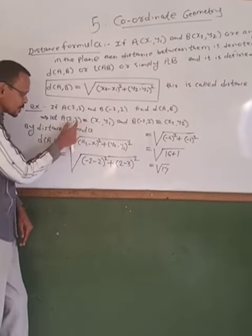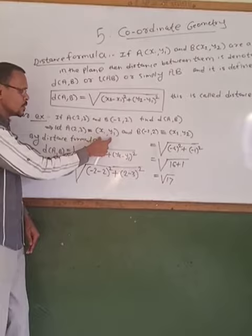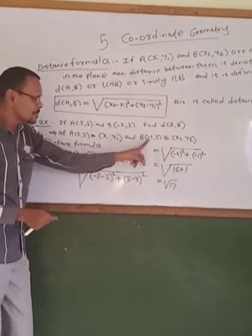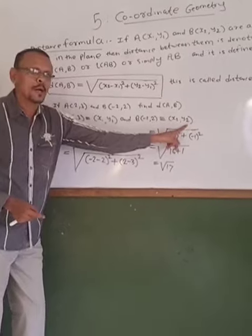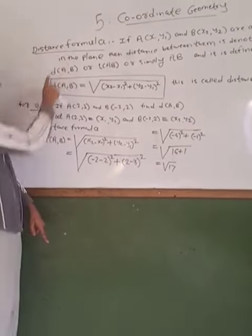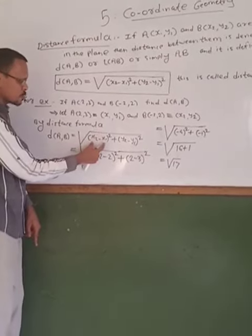We consider it as x1, y1, so A(2,3) equals x1, y1, and B(-2,2) is x2, y2. Then we write the distance formula: distance AB equals √[(x2-x1)² + (y2-y1)²].